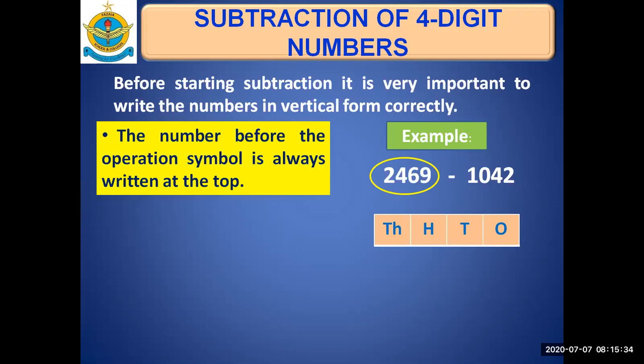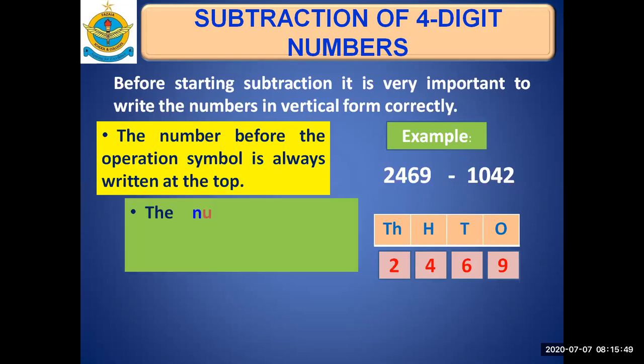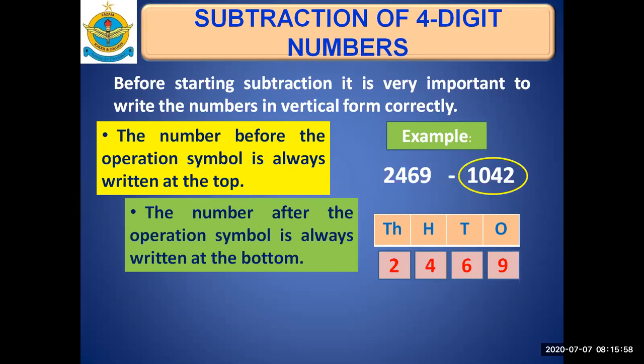The number before the symbol must be written at the top. And we are starting from ones: 9 is at ones column, 6 is at tens column, 4 is in hundreds column, and 2 at thousands column. Now, the number after the subtraction symbol, or the operation symbol, is always written at the bottom. 1042 is the number after the subtraction symbol.